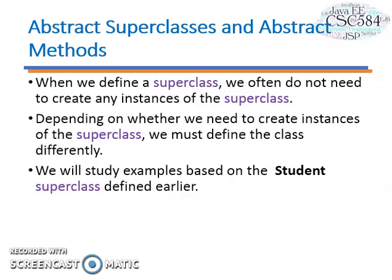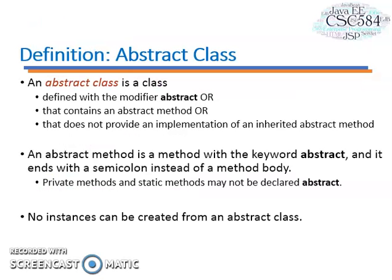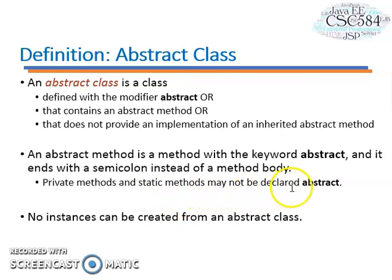Moving on to abstract superclasses and abstract methods. When we define a superclass, we do not necessarily need to create any instances of it. An abstract class is a class defined with the modifier abstract, or that contains an abstract method, or that does not provide an implementation of an inherited abstract method. An abstract method is a method with the keyword abstract and ends with a semicolon instead of a method body. Private methods and static methods may not be declared abstract, and no instances can be created from an abstract class.